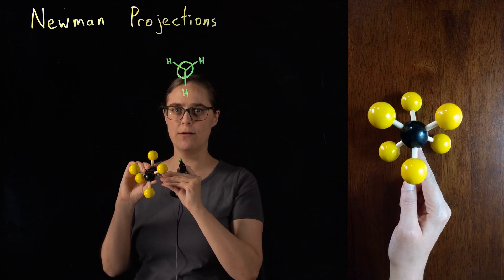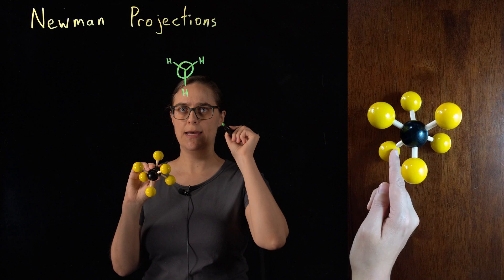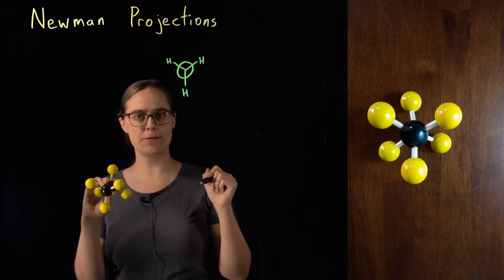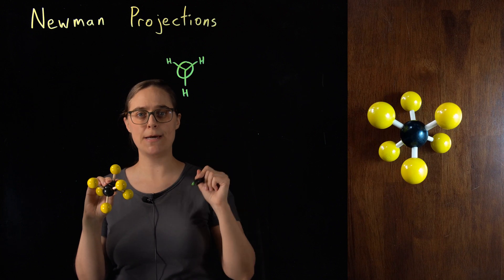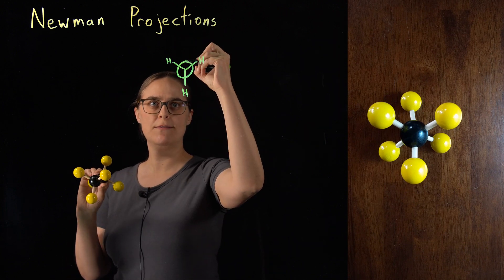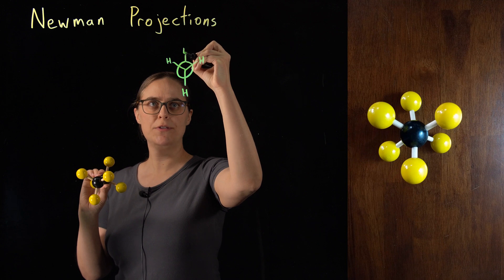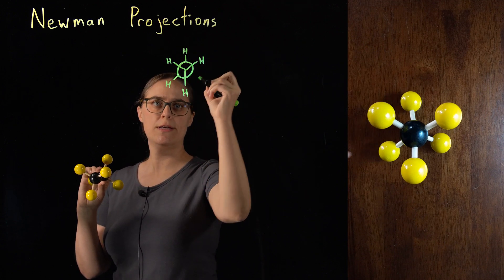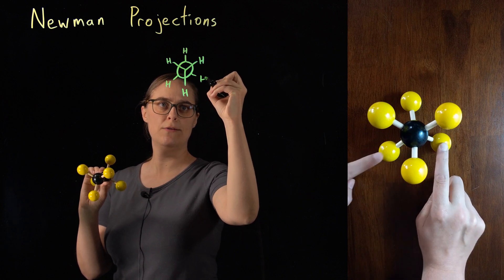The carbon in the back also has three hydrogens on it. I need to draw these a little bit differently. I want to very clearly show that these bonds are from the back carbon, so I need to draw them from the outside of this circle. We have a hydrogen going up, hydrogen down into the left, and a hydrogen down into the right.